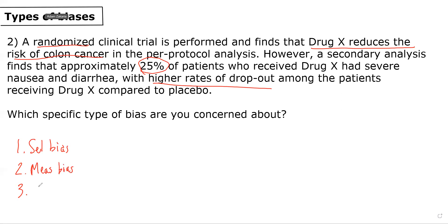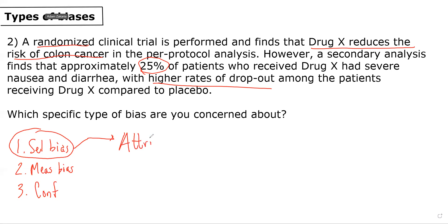And in this case, where they're talking about unequal loss to follow-up, I would be most concerned about a potential selection bias — remembering that selection bias can both occur on the front end of a study when it comes to recruiting study participants, and on the back end when it comes to following up with study participants and loss to follow-up. Where there may be unequal loss to follow-up, I would specifically be concerned about attrition bias, which occurs when there are losses to follow-up and the individuals who are lost to follow-up do not represent the underlying study sample, leading to the study sample being skewed in a certain direction.